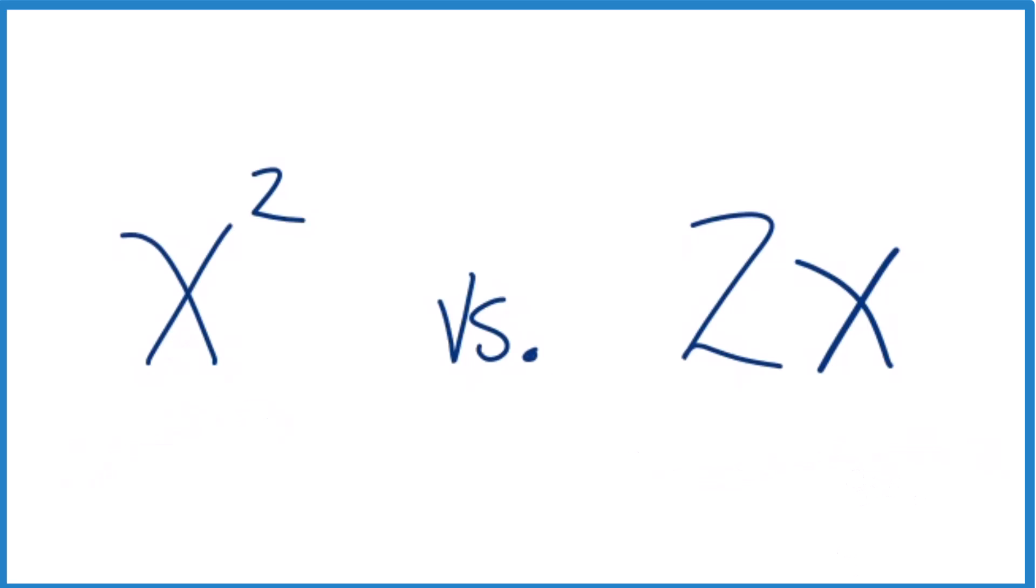Probably the best thing to do when you're confronted with a problem like this in math is to just put some values in for x squared and 2x and then compare them, see what happens. So I'll put 1, 2, and 3 in for x here with x squared and with 2x.